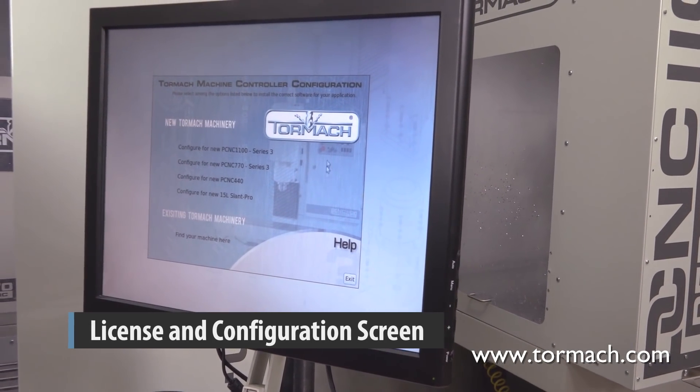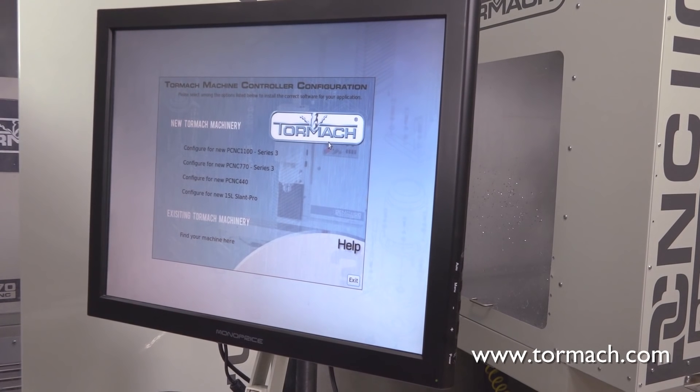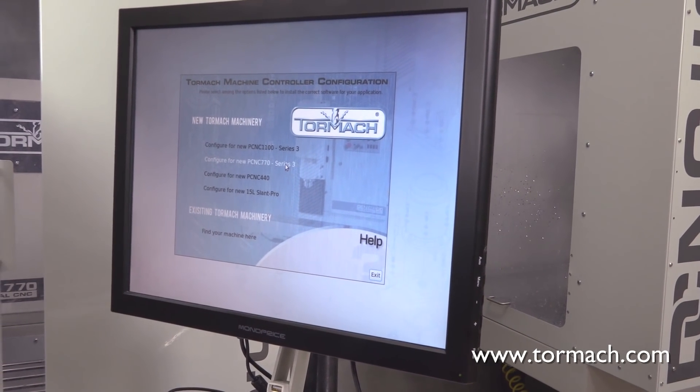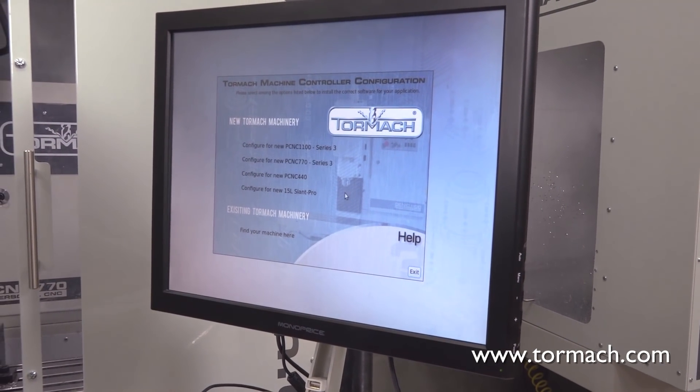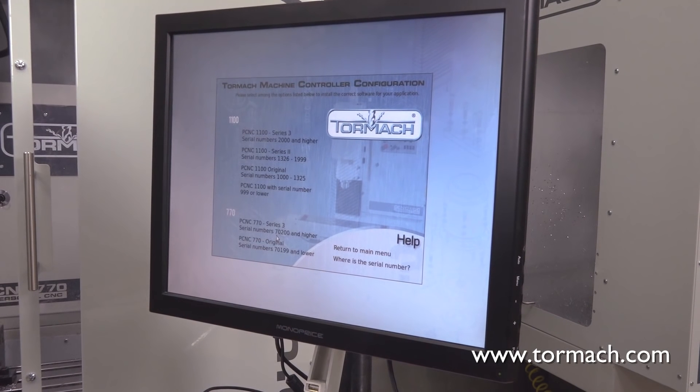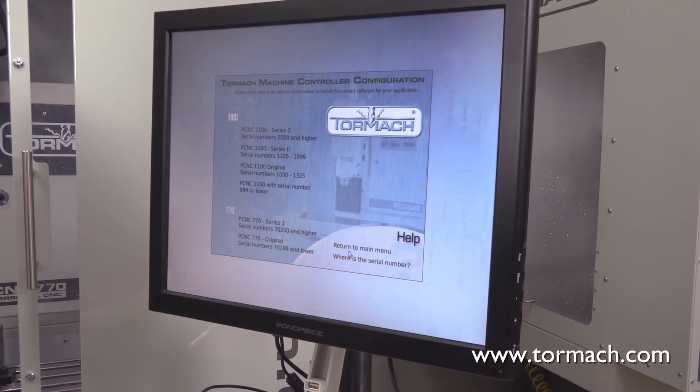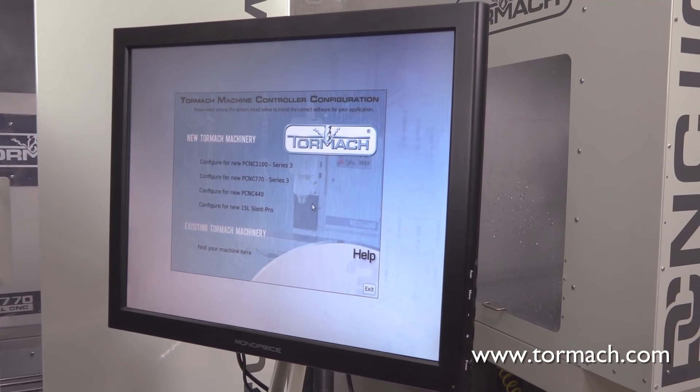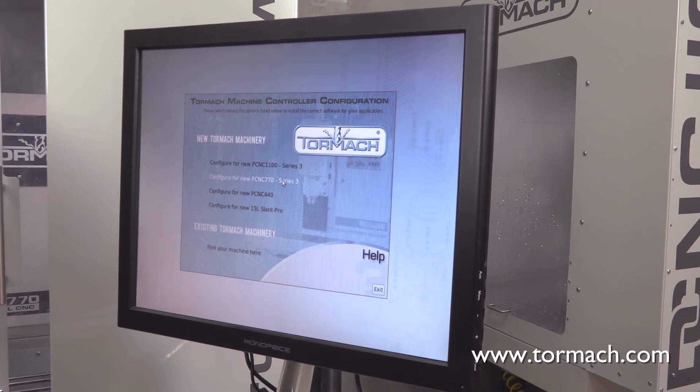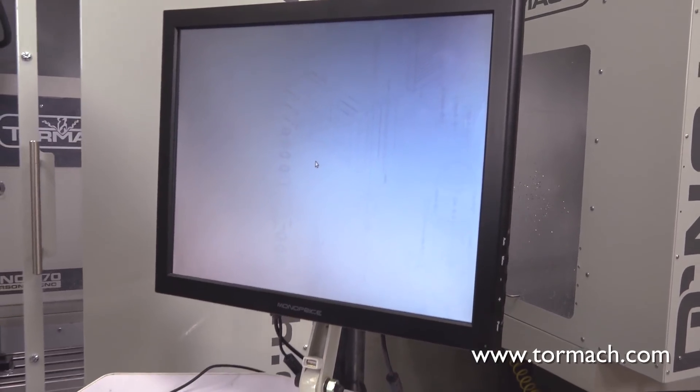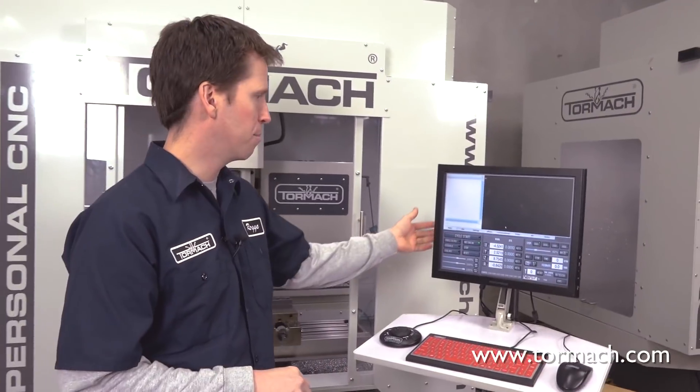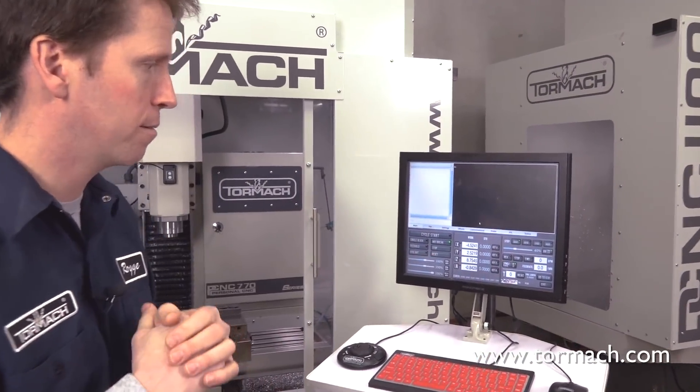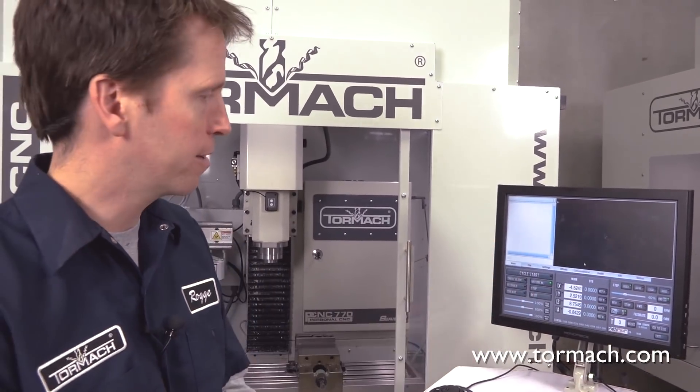Then it asks me what machine I want to configure the software for. We've got a Series 3 770, I'm going to choose that. But I do want to show you that if you had an older machine, PathPilot supports all existing variants of our machines. Here I am, 770 Series 3, I'll go ahead and check that. The mill interface is up. Of course, if we had picked a lathe, you'd see the lathe interface.